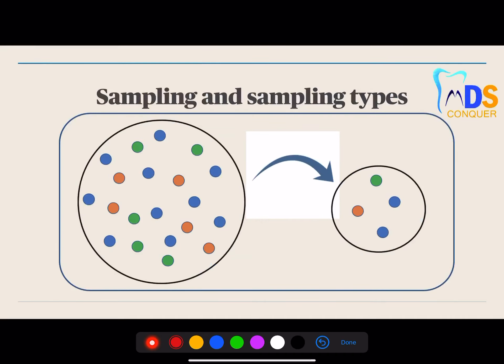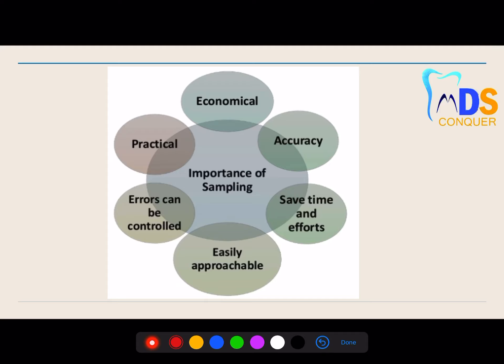The next topic is sampling and sampling techniques, which is again a most commonly asked question. Before you write the definition of sample, there are some basic things you must include. The importance of sampling can be written as points — point one, two, three, four, five, and six. You can write all six points, and even if you draw a diagram with circles it will occupy space, but this type of presentation will definitely get an extra score in your final exam. Try to improve your presentation skills — that is primarily required for theory papers.